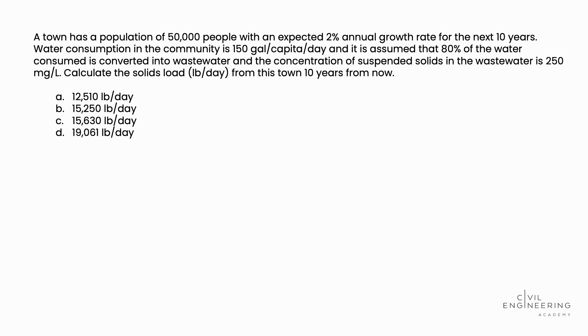So this is a multi-step problem and the first step we're going to turn to the PE Reference Handbook and we're going to use the percent growth population projection equation in the water resources and environmental section. That equation is P at time T equals P at time 0 times the quantity 1 plus K, the growth rate, raised to the N, which is the time period.